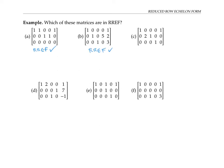Matrix C is not in reduced row echelon form. It doesn't have a leading one in the second row — the first non-zero entry of the second row is a two instead of a one. Matrix D is also not in reduced row echelon form. The problem is that the leading ones are not in descending order: this leading one is to the right of the leading one in the row above it, but this other leading one is actually to the left of the leading one in the row above it.